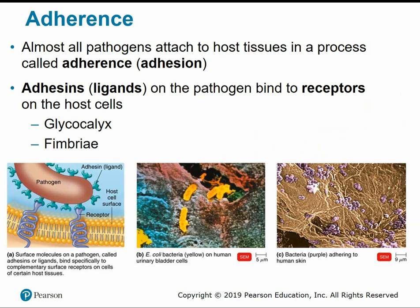In order to infect a host cell, the pathogen has to be able to adhere or stick to the host cell to gain entry — this is called adherence. Almost all pathogens have to attach to host tissues through adherence or adhesion. Adherence is done by proteins called adhesins or ligands on the pathogen that bind to receptors on the host cells. These adhesins can be found on external structures like the glycocalyx or surface structures like the fimbriae or pili, allowing the pathogen to bind and gain entry.